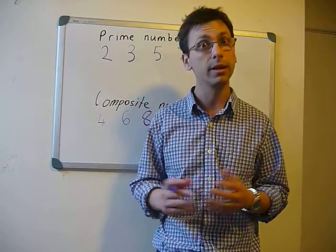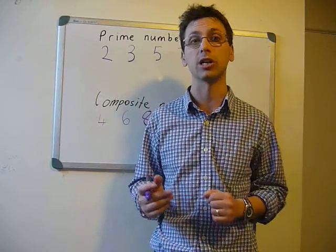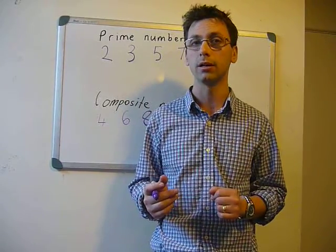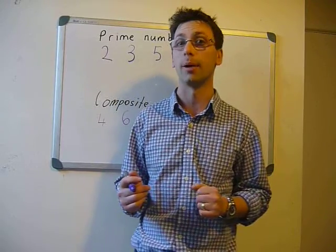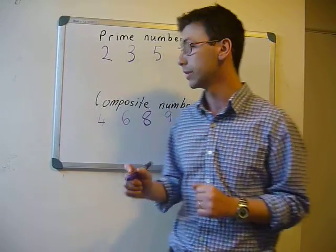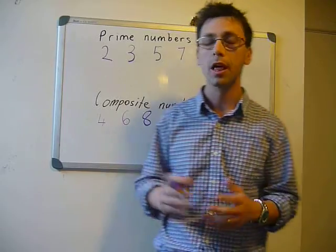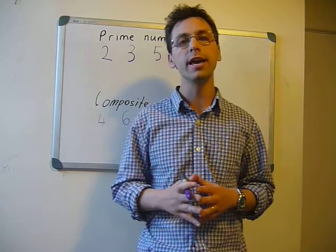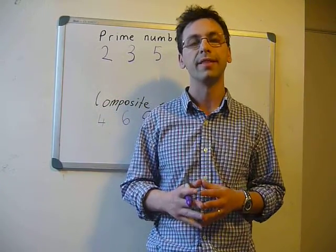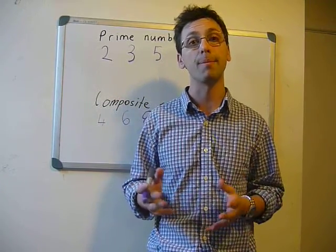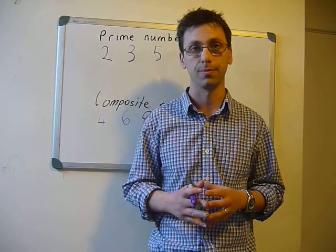Ten? Ten is a composite number because you have five times two and ten times one. So ten is a composite number. So there you have it — the first ten numbers divided up between prime and composite.